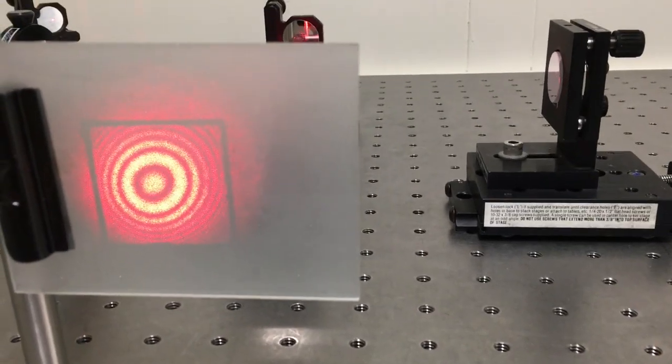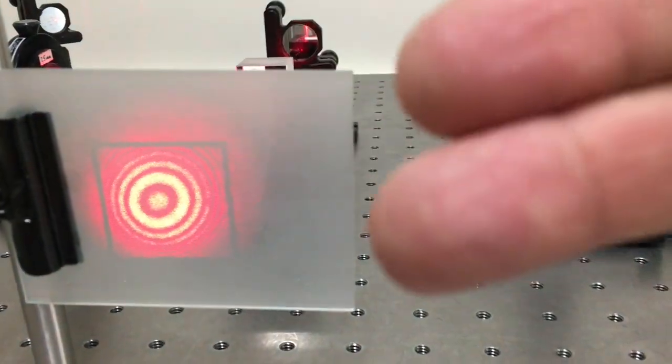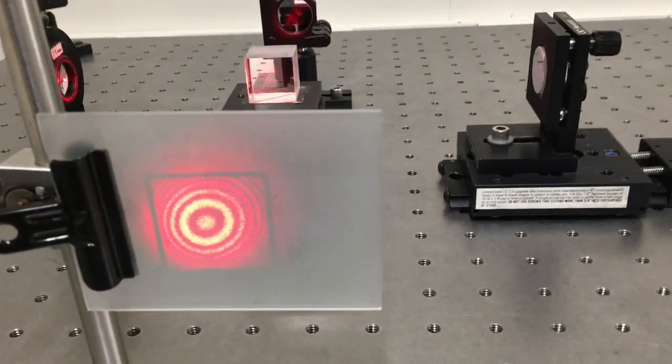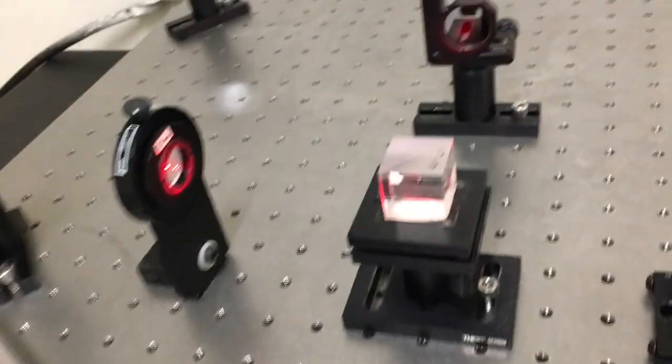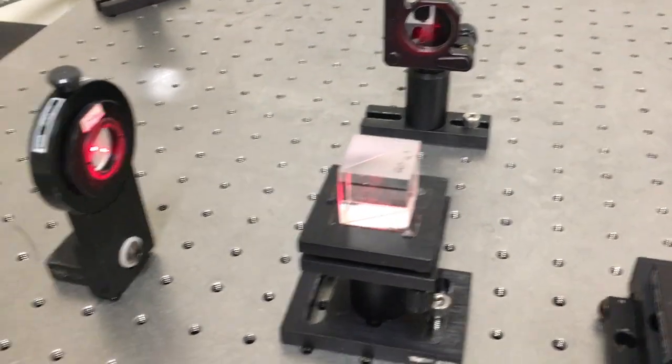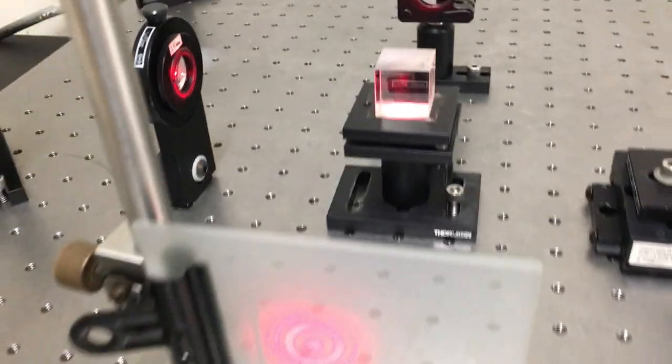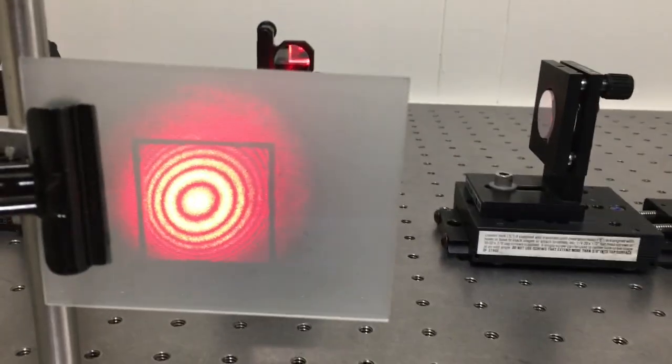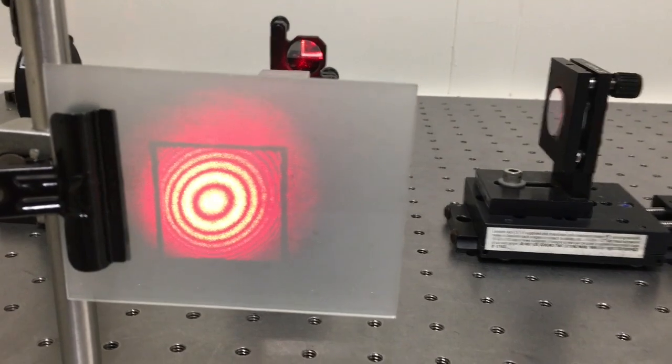If I'm interfering a plane wave with a plane wave, the whole thing should either go light or dark all at once. But it's not plane waves we're dealing with anymore. After the light goes through the lens and comes to focus right here, the light is actually a spherical wave. So think about what happens when you interfere one spherical wave with another spherical wave.